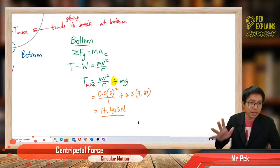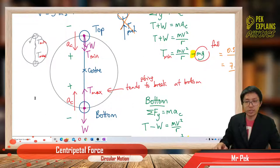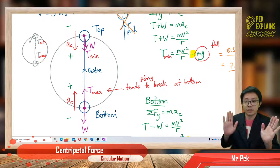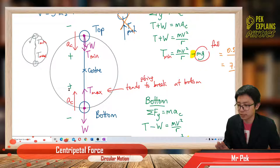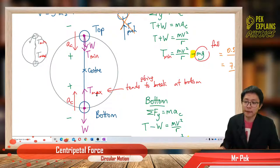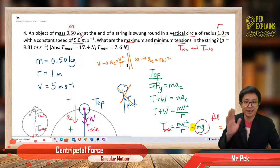That's how you do the questions for vertical circular motion. You must know how to draw the free body diagram. The force following the acceleration direction is always positive. At the top, acceleration is going down so downward is positive. At the bottom, acceleration is going up so the tension force going up is positive. Hope you enjoy. Let's continue with question 5 later on. Bye!